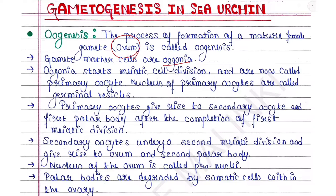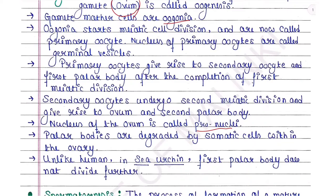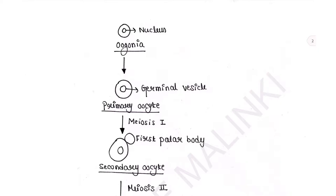After the completion of first meiotic division, secondary oocytes undergo second meiotic division and give rise to ovum and second polar body. The nucleus of the ovum is called pronuclei. Polar bodies are degraded by somatic cells within the ovary. Unlike in humans, in C. arching the first polar body does not divide further.